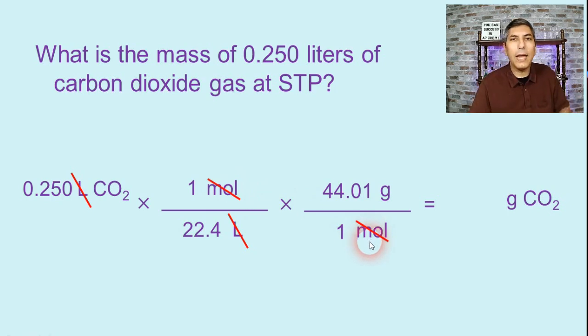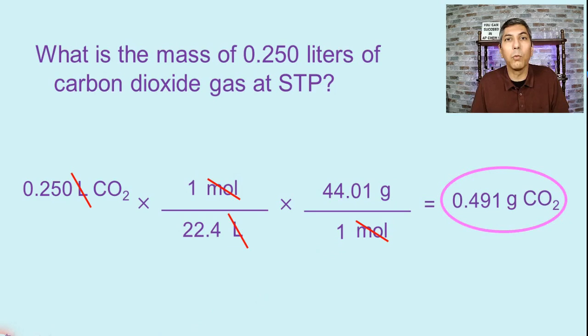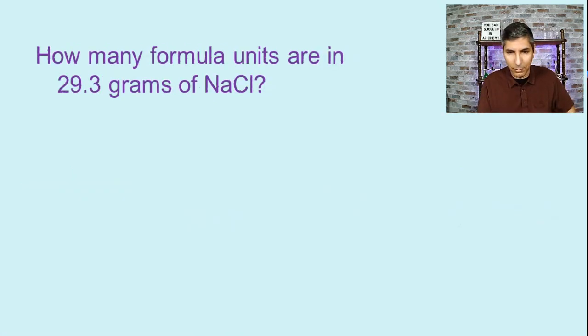And now on my calculator, all I have to do is take 0.250 divided by 22.4 times 44.01. And when I compute that, I find that the answer is about 0.491 grams of carbon dioxide gas. So that's pretty neat that we can actually take a volume of a gas and figure out what the mass of the gas is without ever using a scale or a balance. So let's try another example.